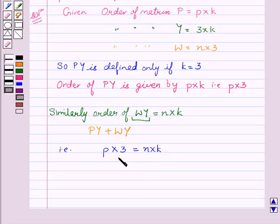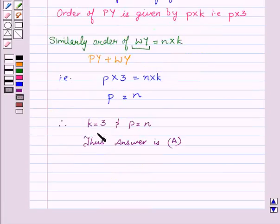Hence we get that P equal to N. Therefore K equal to 3 and P equal to N. Thus the answer is A.